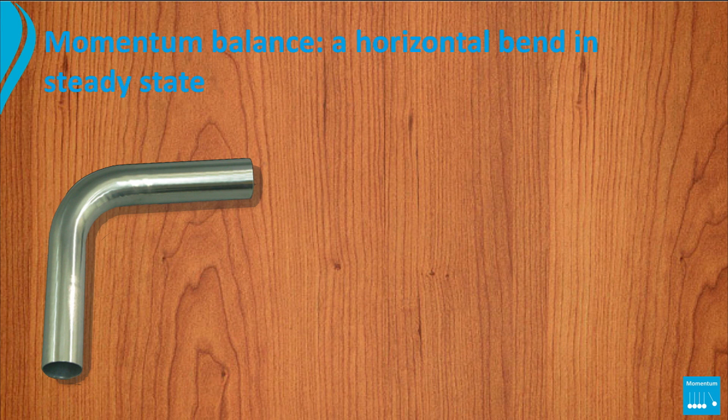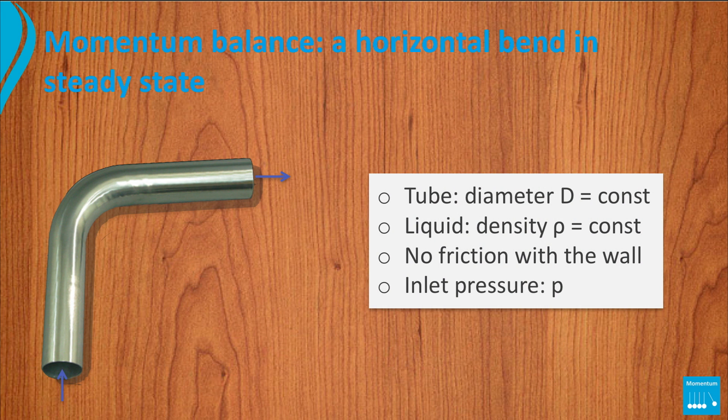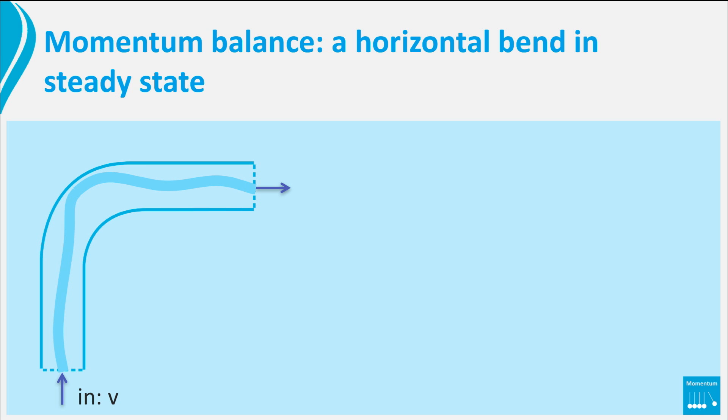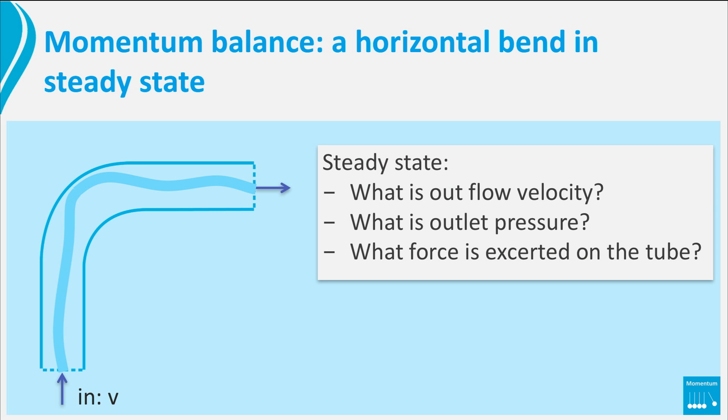So far so good. But let's put this to practice and do an example. We have a horizontal tube with a 90 degree bend in it. Water is flowing through in a steady state, with a given inlet velocity. Moreover, we know the pressure at the inlet. We take a case in which friction of the water with the wall can be neglected. In a steady state, what is the outlet velocity? What is the outlet pressure? What forces need to be exerted on the tube from preventing to move, if any?